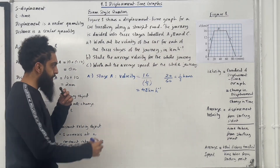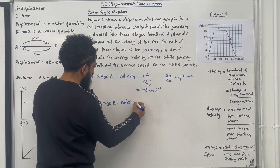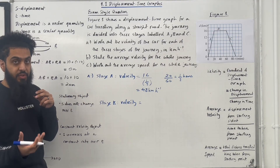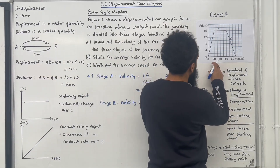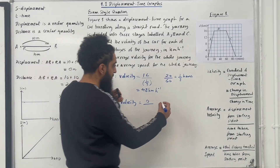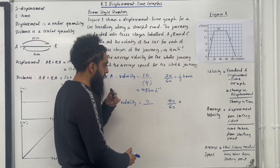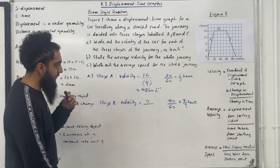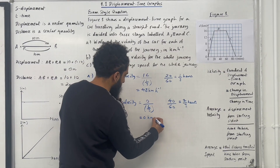Moving on to Stage B. Velocity equals change in displacement over change in time. For Stage B, the change in displacement is zero. The change in time is from 20 minutes to 60 minutes, so 40 minutes, which converts to 2/3 hours by dividing by 60. So we have zero over 2/3, giving us zero kilometres per hour.